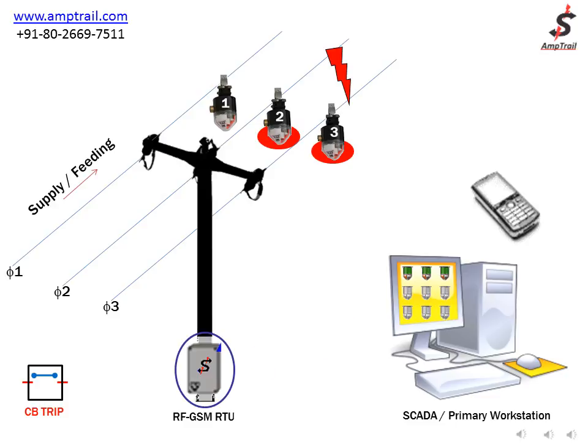Please observe the computer screen in the SCADA workstation, which now shows indicators two and three in red color, indicating a fault. The SCADA workstation will then send a text message with the fault information to predefined GSM numbers.